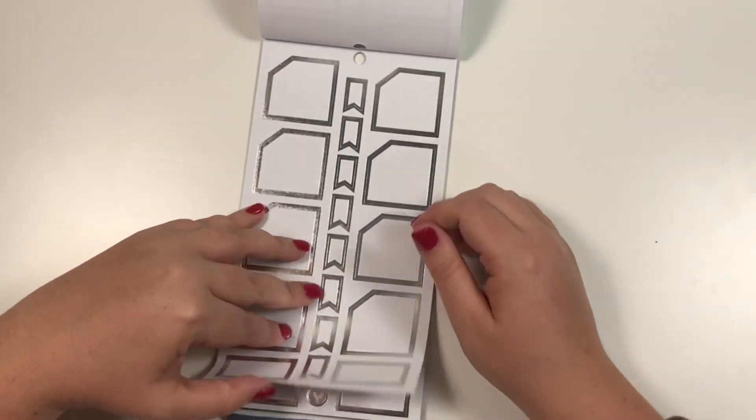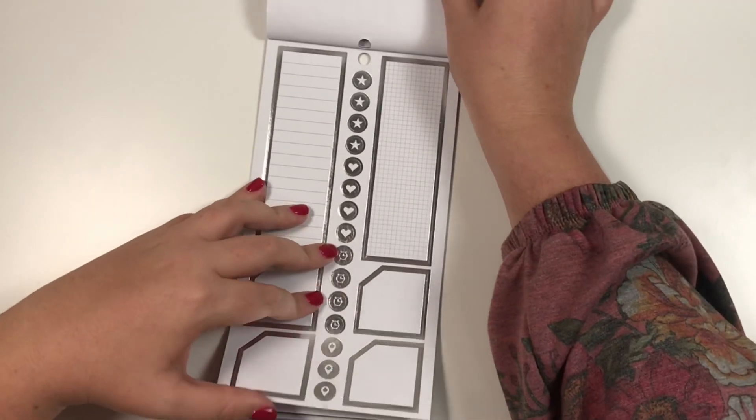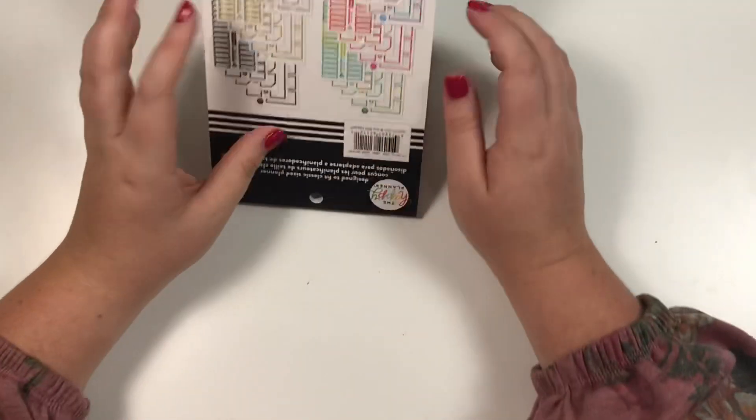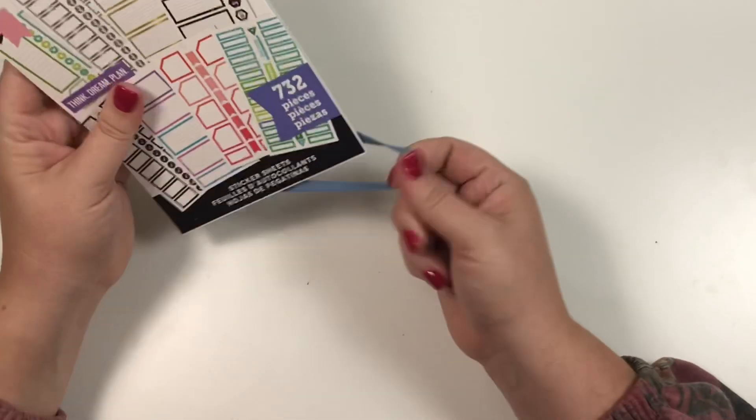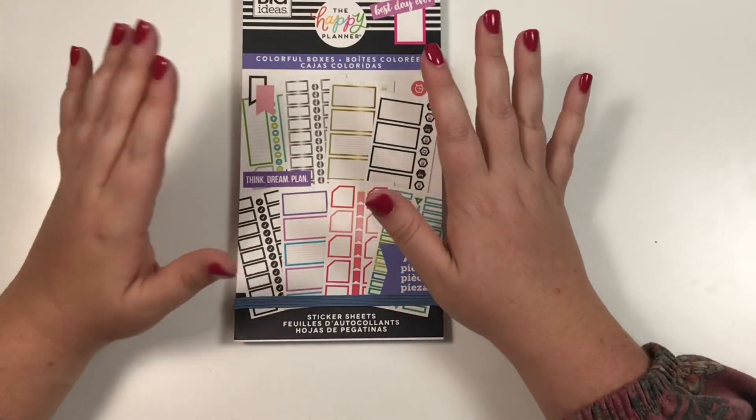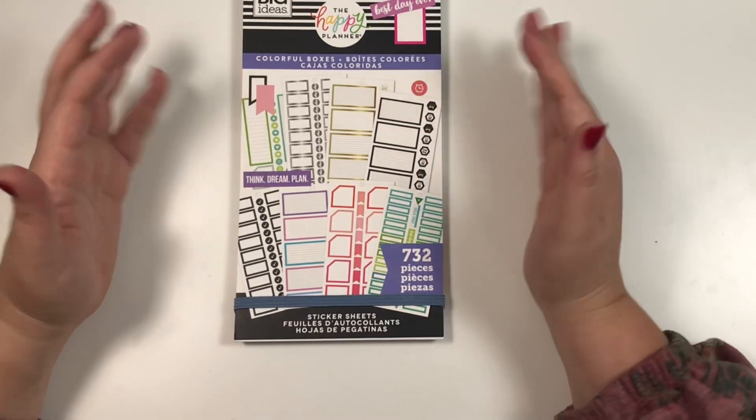If I still had a regular Colorful Boxes, I would flip through them side by side so that you could see, but those are so used up that I don't think I even have them. So it's similar, but it's also a little new, so I had to grab it because I love Colorful Boxes.